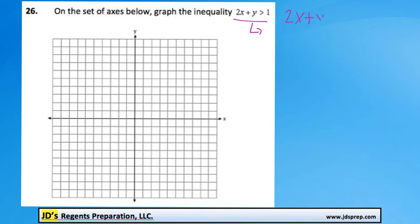We've got 2x plus y is greater than 1. I can subtract 2x in order to isolate y. And we get y is greater than negative 2x plus 1.